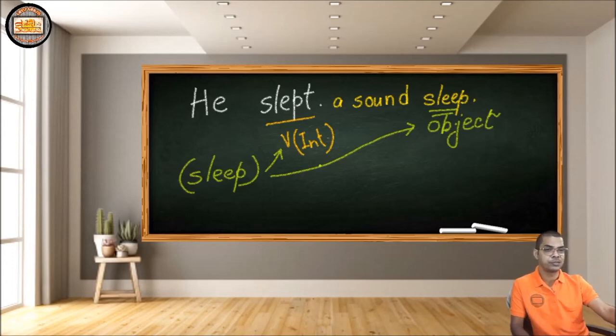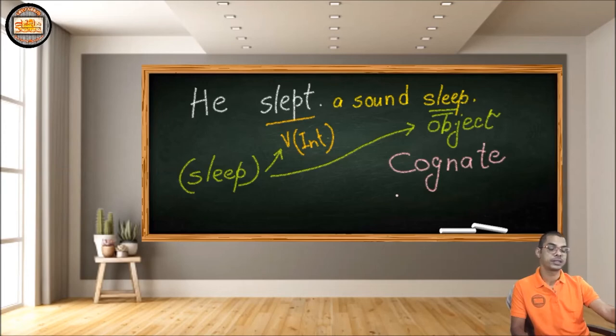And we get a very special object here, and the object is called a cognate object. Yes dear friends, this is what we call a cognate object. When the verb and the object are derived from the same word—they're just two different parts of speech—we call them a cognate object.